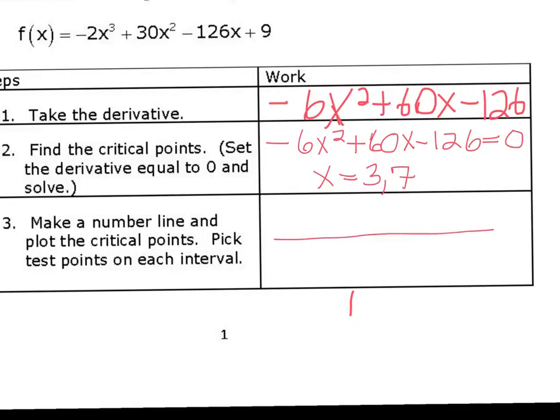We're going to make a number line, and we're going to plot those two critical points. So 3 and 7. And then we can see that the interval is divided into three pieces now, because there's two critical points. So we need to pick a test point before the 3, between the 3 and the 7, and after the 7. So let's say we pick 0, 4, and 8.